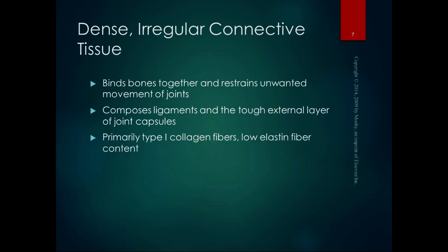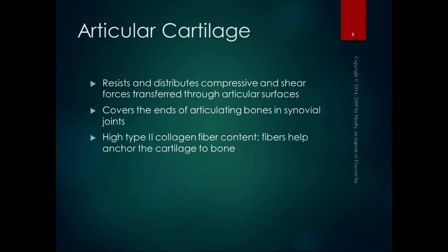Dense irregular connective tissue binds bones together and restrains unwanted movement of joints. Ligaments and the tough external layer of joint capsules — their job is to restrict excess motion. They're primarily those tough type 1 collagen fibers with low elastin content because they're trying to hold things steady. Articular cartilage resists and distributes compressive and shear forces transmitted through the articular surface, and it gives you the sliding surface needed for the roll, slide, and spin aspects of arthrokinematics.